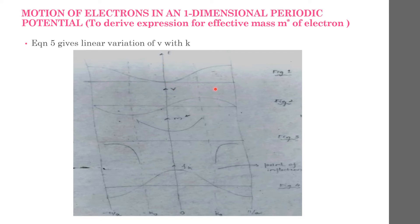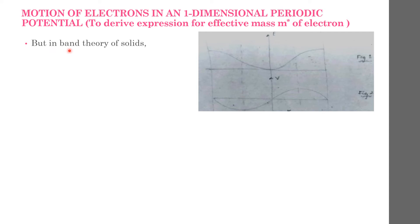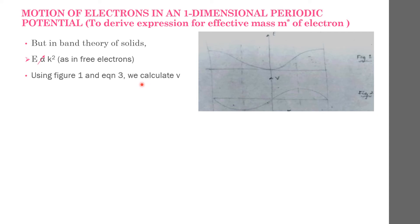The E versus k graph we have seen earlier when discussing Brillouin zones. This is the velocity v versus k graph — you get this kind of curve. In band theory of solids, E is not proportional to k² the way it is for free electrons. Using the E versus k curve (figure 1) and equation 3, we calculate the velocity v, and find that at the bottom of the energy band, at k = 0, v is 0.